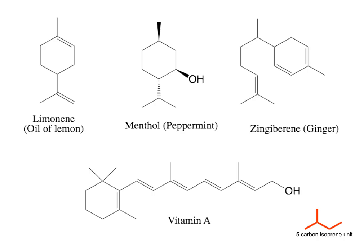Terpenes are really cool molecules, largely derived from plants. I've shown a few here, for example, the oil of lemon, peppermint, ginger. These are structures we're actually familiar with, along with vitamin A shown at the bottom.